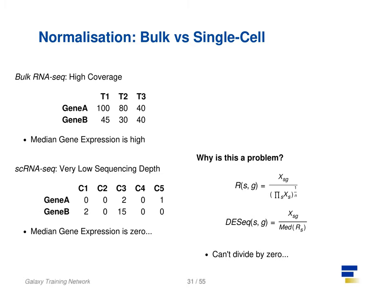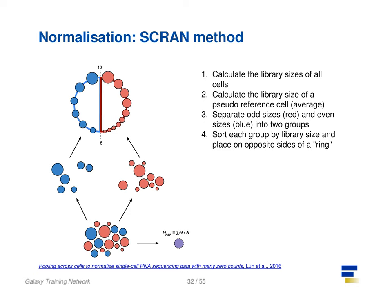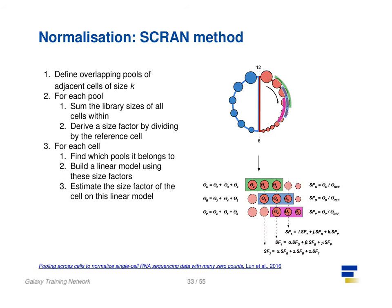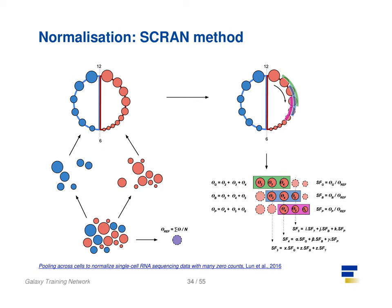There are methods to get around these zero counts. One such method is the SCRAN method, which works by creating overlapping pools of cells such that any individual cell is characterized by cells of similar library sizes. The method involves splitting all cells into an odd and even group by their library size, and arranging them onto a ring structure where neighboring cells on the ring have similar sizes. Overlapping pools of fixed sizes are defined, resulting in each cell being defined by multiple pools. A linear model for that cell can then be built by the pools it occurs within, and normalization factors for all cells can be determined this way.